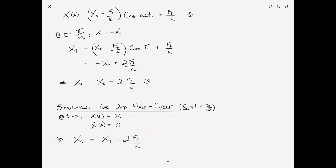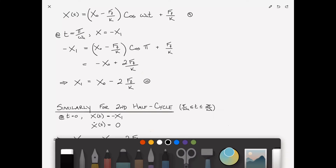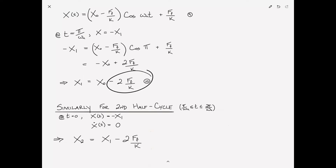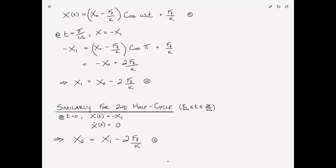In other words, just as we released from X sub zero and arrived at X1 — a decrease of two F sub F over K — the amplitude decreases by the same amount going from X1 to X2. That should hardly be surprising — equation eleven.